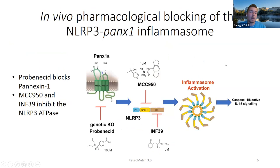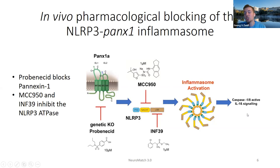A third type of experiment we are doing is behavioral testing. We do this in vivo through pharmacological blocking of the NLRP3 inflammasome. We're able to block PANNEXIN-1A through either a genetic knockout or through the use of probenecid, which is able to block Pannexin. We can also use MCC950 or INF39, which are both able to block the NLRP3 inflammasome, blocking inflammation activation and caspase activation.